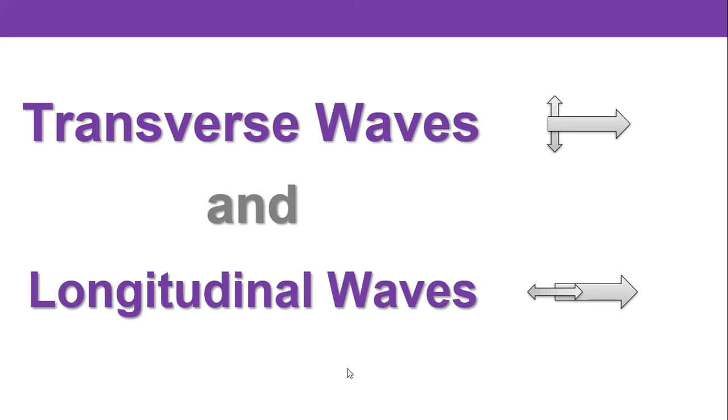Our next topic in chapter 19 is transverse waves and longitudinal waves. I have a simple diagram to the right that might help us remember the difference between these two. It's all about wave motion represented by the big arrow and vibrations represented by the small arrows. You can see that in one case it's perpendicular in the case of transverse waves and it's parallel in the case of longitudinal waves.